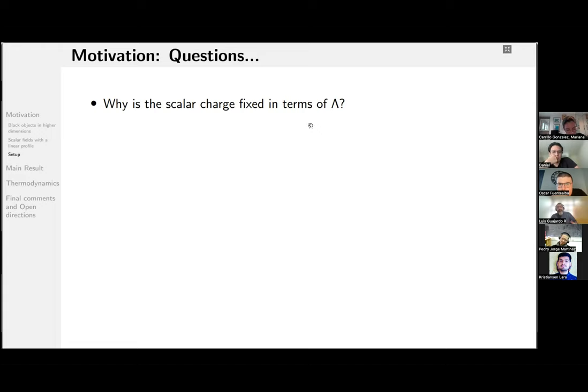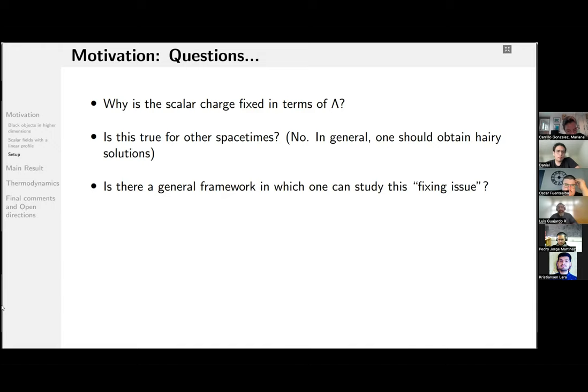Okay, at this point, and as Oscar asked, the scalar charge gets fixed in terms of the cosmological constant, and if you are following what I'm trying to say, it is because of the compatibility issue between the background and the string coordinate. But you can ask if this fixing is always true for other kinds of spacetimes, and the answer is not at all. Definitely no. Indeed, one of the most interesting things about scalar fields is that they induce a new degree of freedom in the system, and just for strings we are getting this restriction. And so, is there a general framework in which we can study this fixing issue?